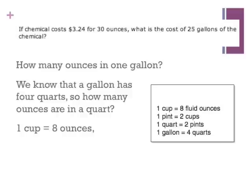We see that 1 cup equals 8 fluid ounces. And since 1 pint contains 2 cups, then 1 pint would be 16 ounces. And since 1 quart contains 2 pints, then 1 quart would be 32 ounces.